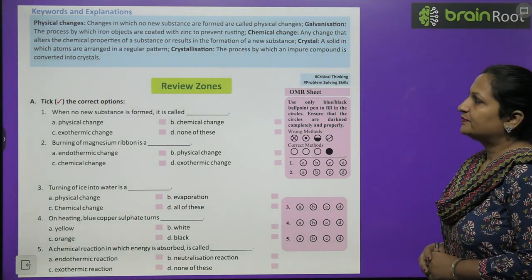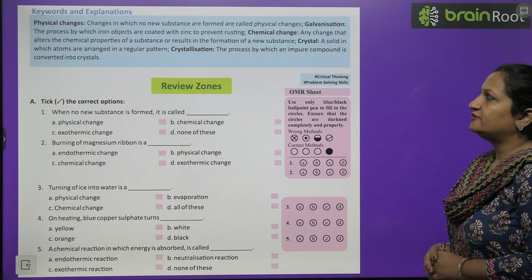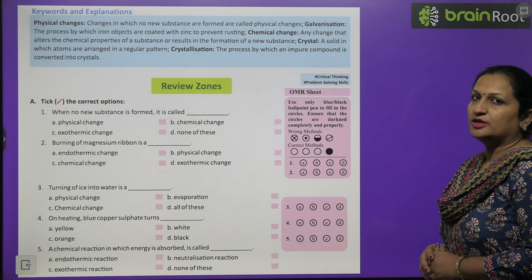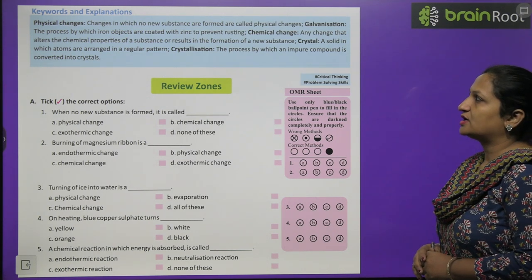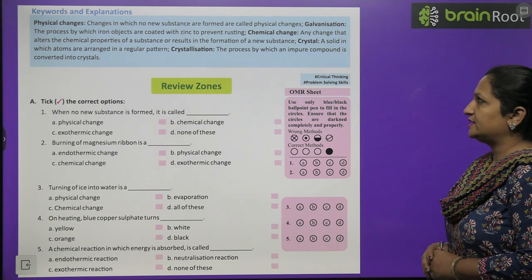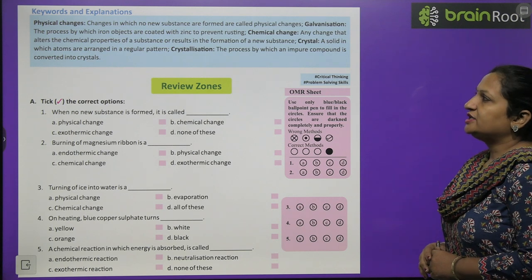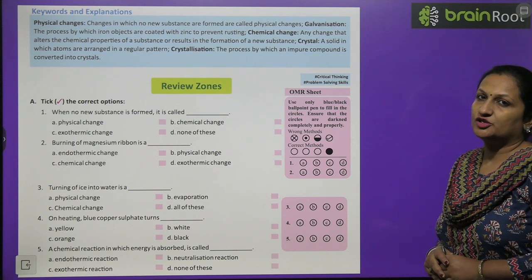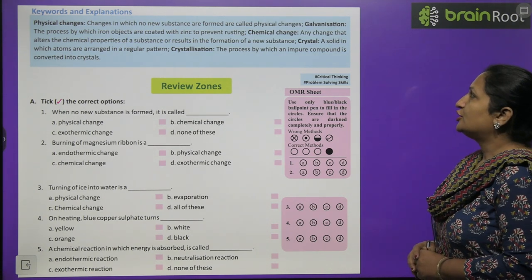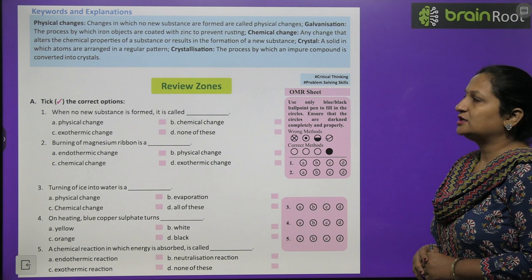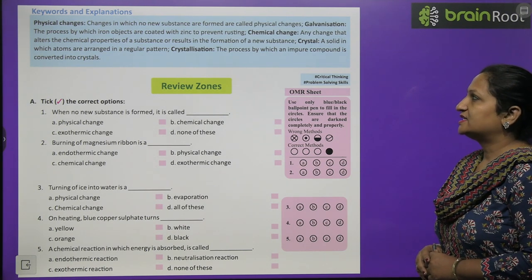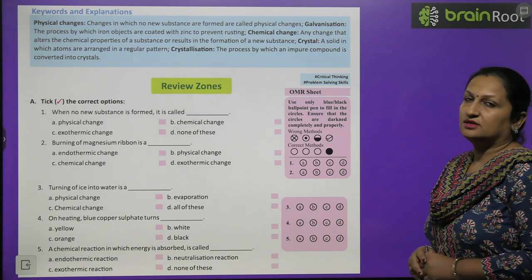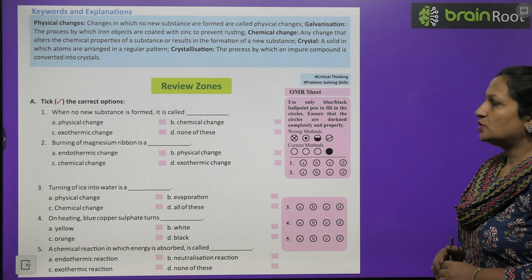Keywords: Physical change - a change in which no new substance is formed. Galvanization - the process by which iron objects are coated with zinc to prevent rusting. Chemical change - any change that alters the chemical properties of a substance or results in the formation of a new substance. Crystal - a solid in which atoms are arranged in a regular pattern. Crystallization - the process by which an impure compound is converted into crystals.